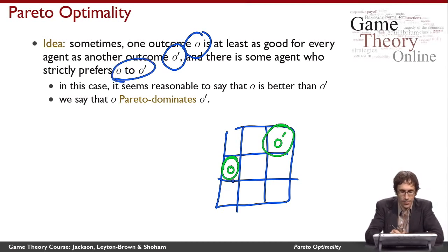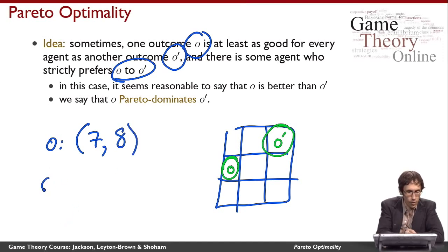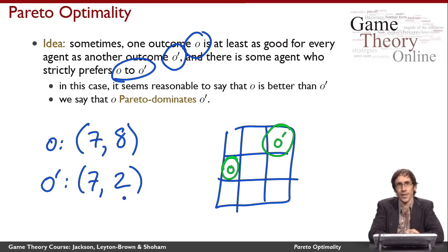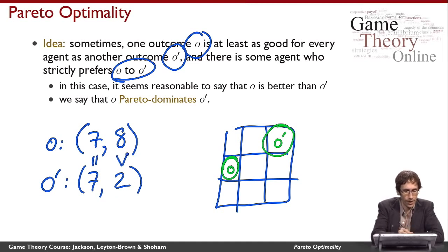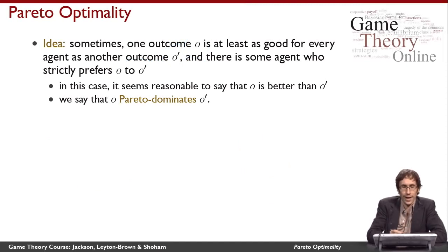Let me make an example of this. O might be that player one gets seven units of utility and player two gets eight, and O prime might be that player one gets seven units of utility and player two gets two units of utility. In this case, O is at least as good for everybody — it's equal for player one and strictly better for player two. So it seems reasonable to say that an outside observer should feel that outcome O is better than outcome O prime.